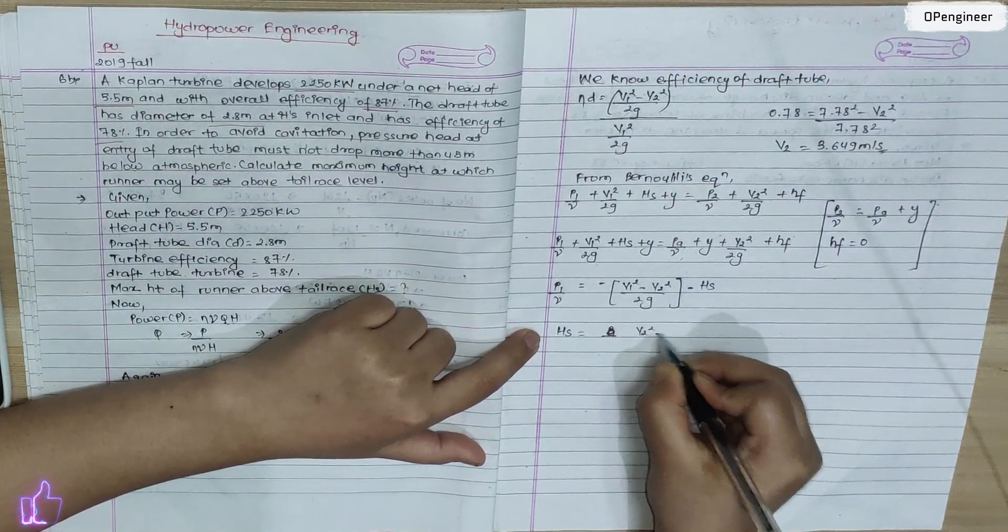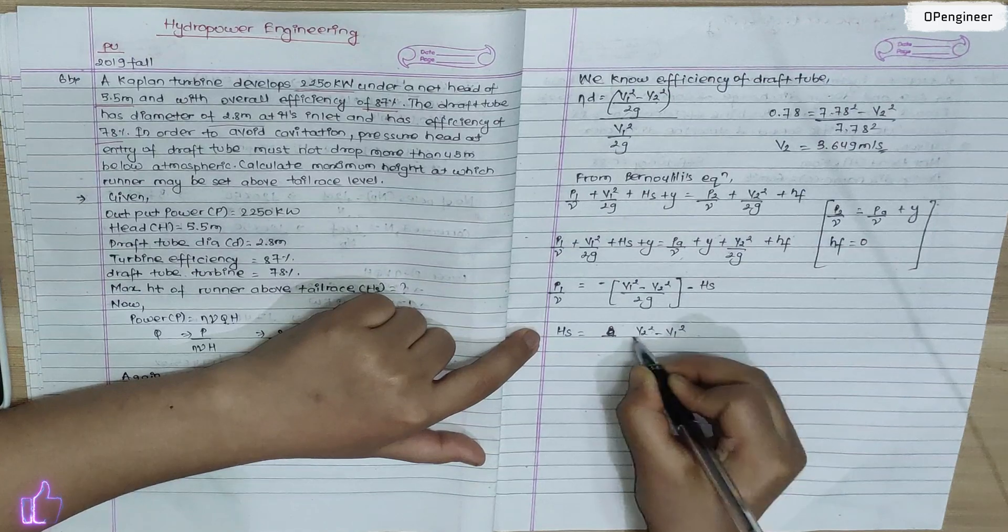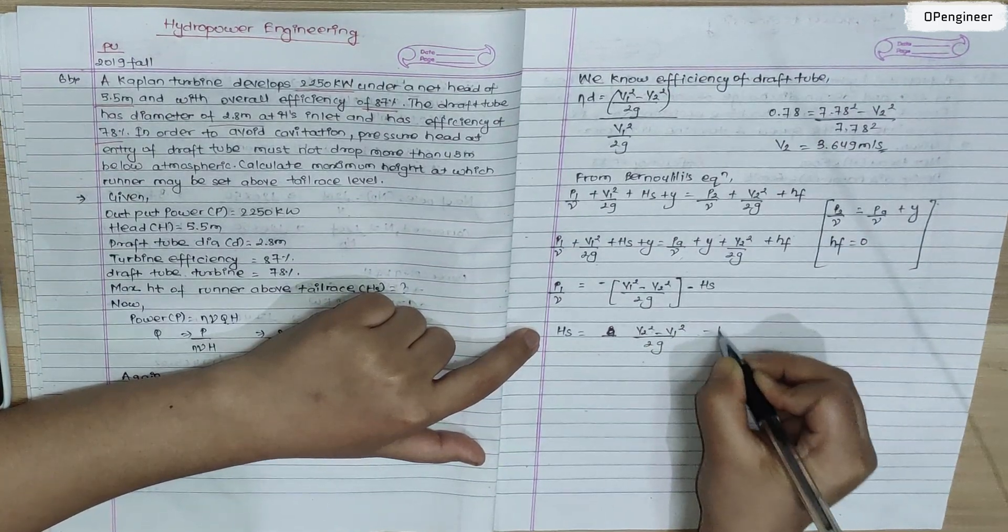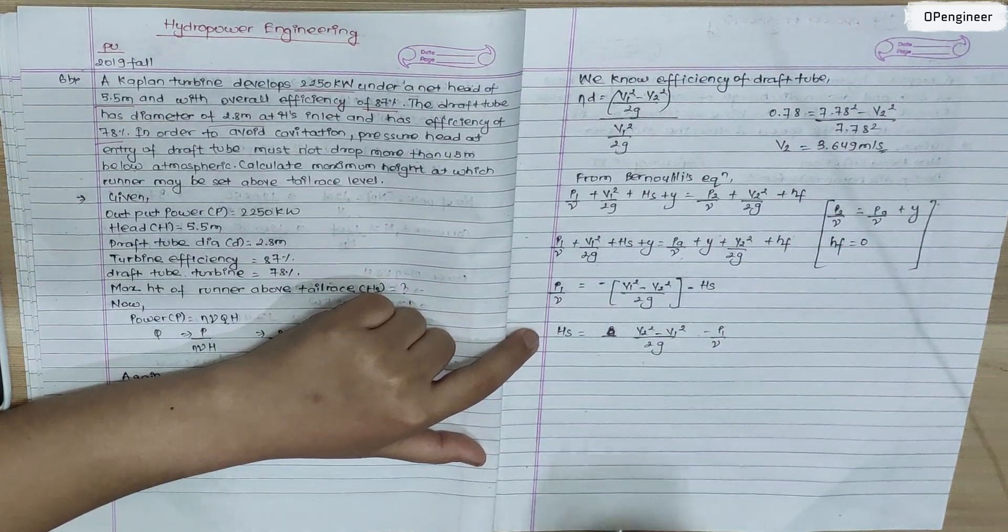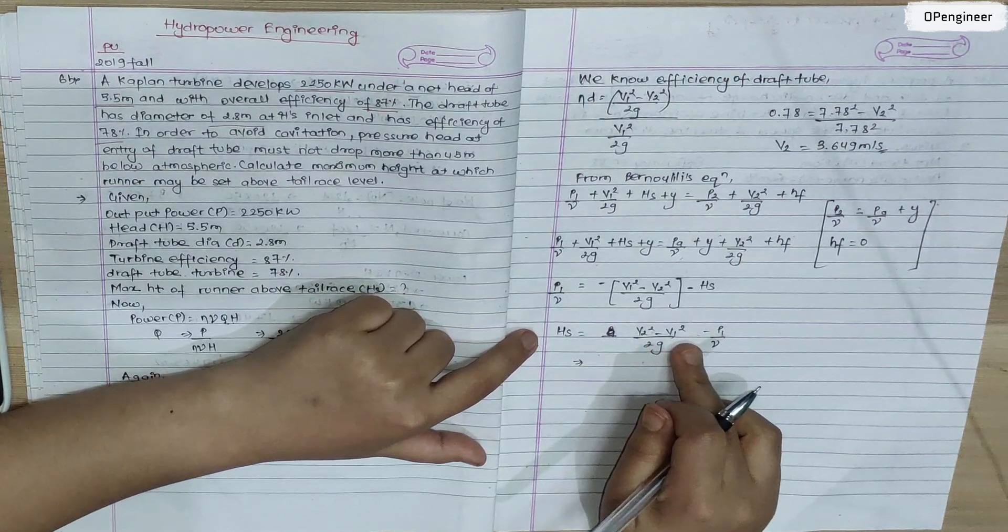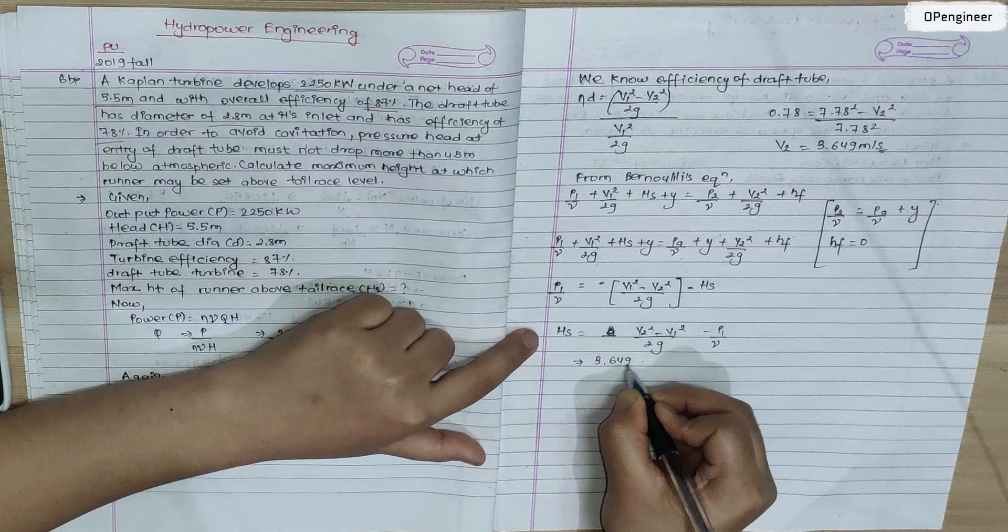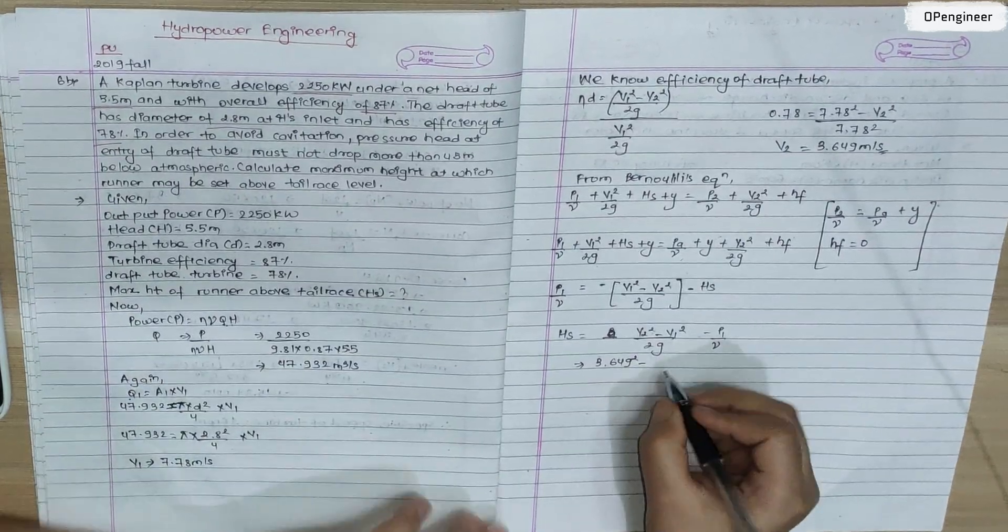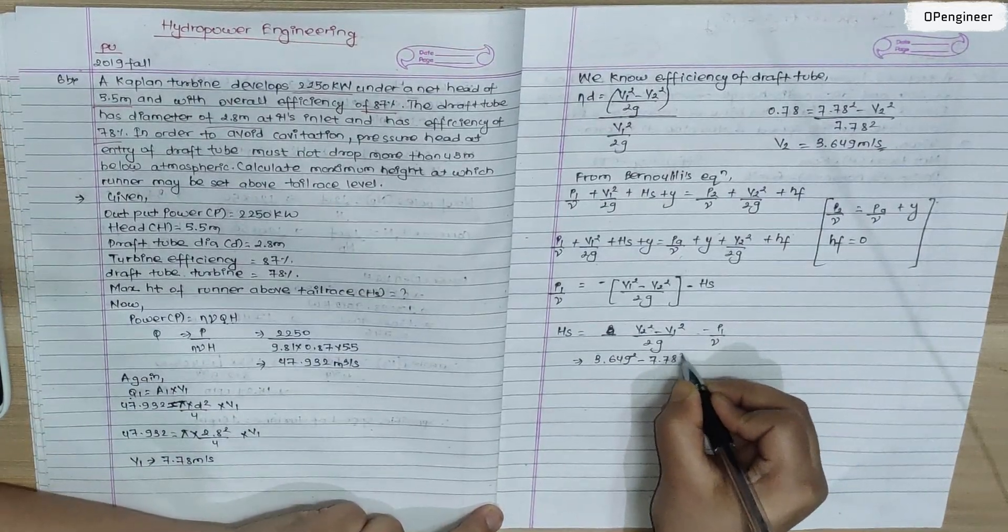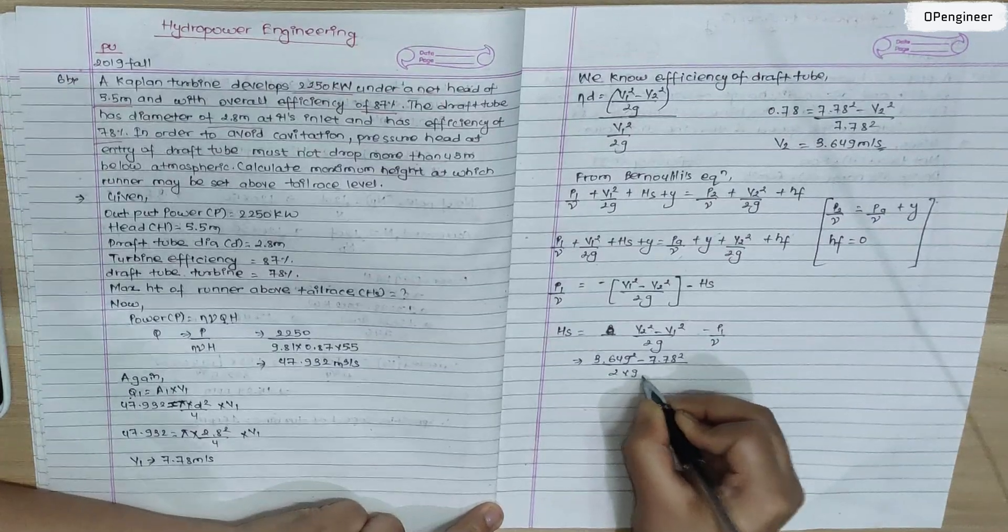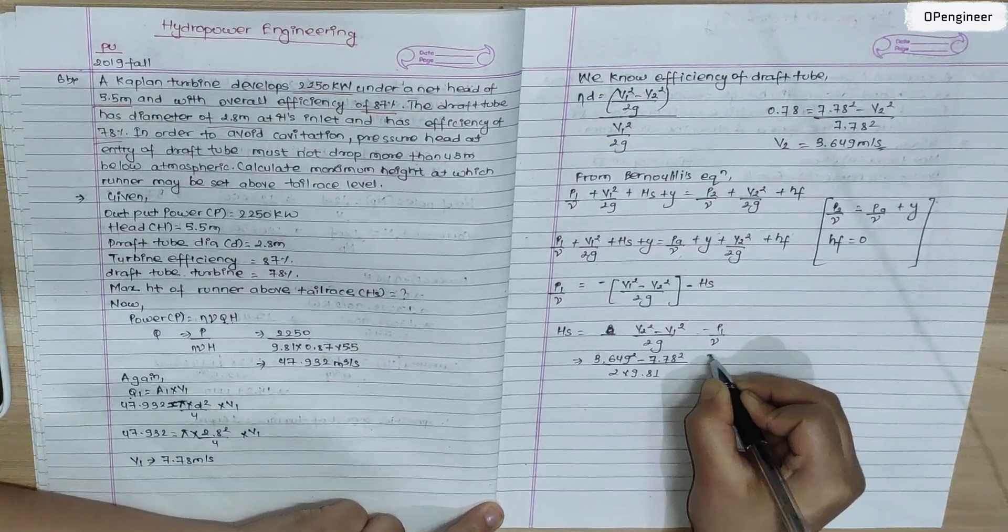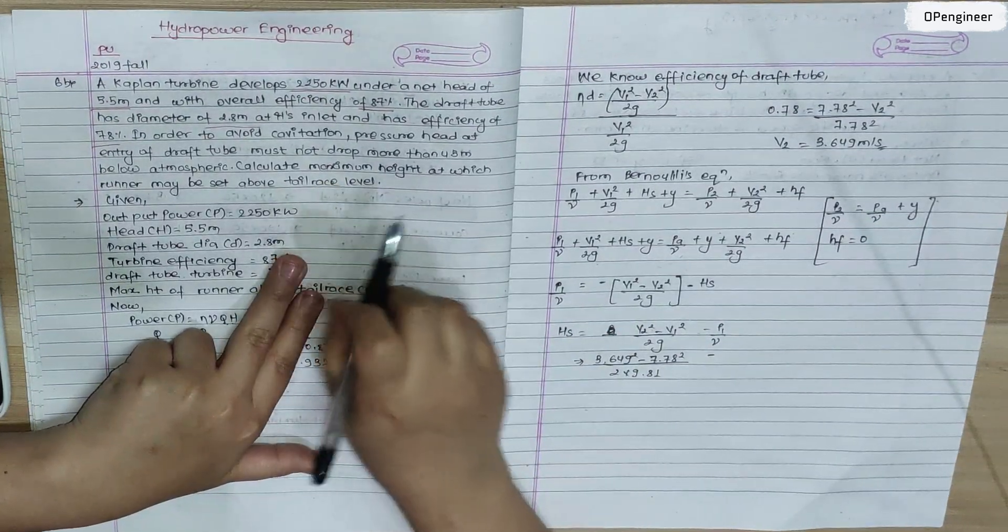Rearranging for Yf: Yf = (V2²/2g - V1²/2g) - P1/γ. Substituting values: V1 is 7.78 square by 2 into 9.81.